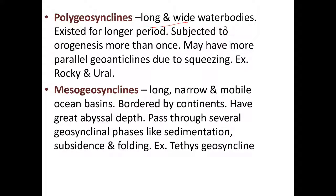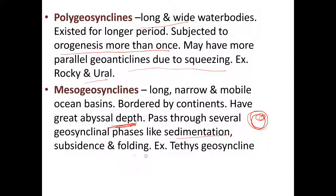The next type is poly geosynclines — long and wide water bodies that existed for a long period and are subjected to orogenesis more than once. 'Poly' means more than once, and they may have multiple parallel geo-anticlines. Example: the Rocky Mountains and Ural Mountains. Meso geosynclines are long, narrow, and mobile ocean basins bordered by continents, with great abyssal depth, and they pass through several geosyncline phases like sedimentation, subsidence, and folding. Example: the Tethys geosyncline.